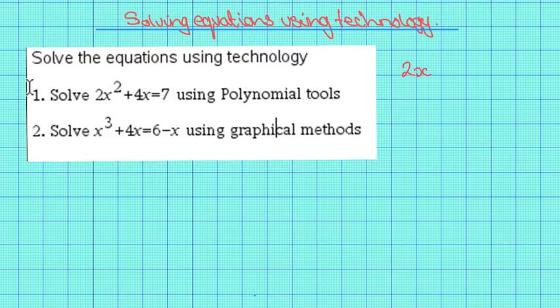So 2x squared plus 4x equals 7. If we subtract 7 from both sides, we get 2x squared plus 4x minus 7 is equal to 0. It is now in the general form where a equals 2, b equals 4, and c is equal to minus 7.